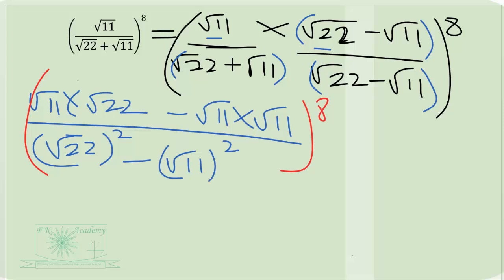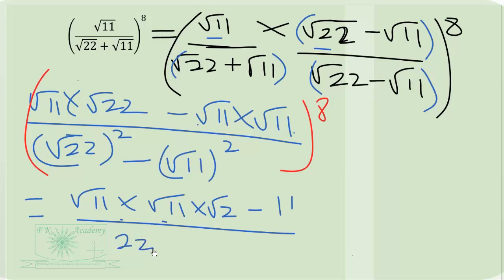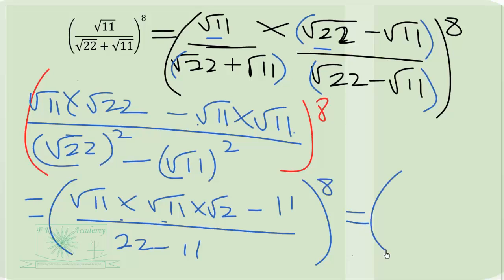This will be equal to square root of 11 times square root of 11 again, times square root of 2 minus 11. So square root of 11 times square root of 11 equals 11. This will be equal to 11 square root of 2 minus 11, all over 11 exponent 8.